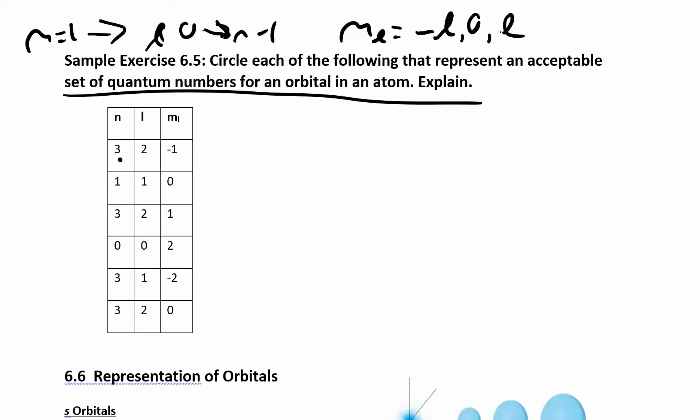So let's start with the first one. So n is 3. So if n is 3, l could be what? l could be 0, 1, or 2. So 2, that's fine. So if l is 2, ml can be negative 2, negative 1, 0, 1, or 2. So it's fine. So this is an acceptable set of quantum numbers because it follows all the rules. So yes, that one's fine.